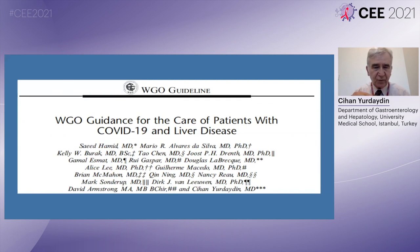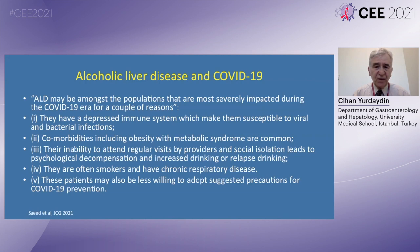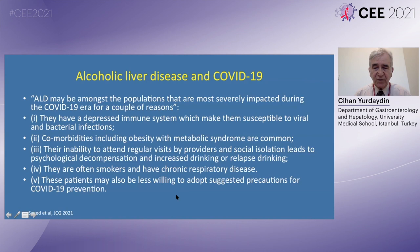We have mentioned the importance of alcoholic liver disease in WGO guidelines on COVID-19 and liver disease, to which we contributed in their writing. As early as August 2020, we stated that alcohol users may be amongst the populations most severely impacted during the COVID-19 era: they have a depressed immune system, comorbidities such as obesity and metabolic syndrome, inability to attend regular provider visits leading to psychological decompensation and increased or relapsed drinking, and they are often smokers with chronic lung disease. These patients may also be less willing to adopt suggested precautions for COVID-19 prevention.